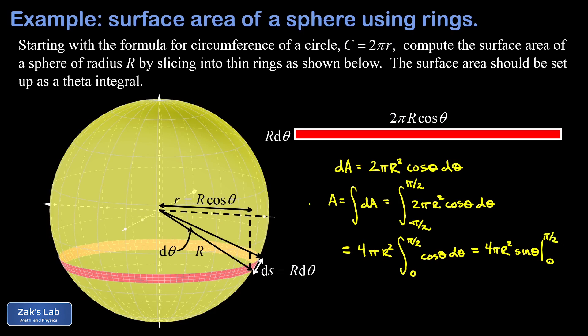Note that when we sub in the lower limit, sine of zero is zero, so we don't have to worry about that. That's the whole advantage of using symmetry tricks - zeros are really convenient.